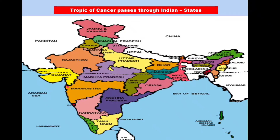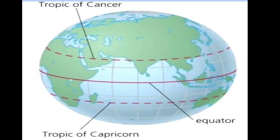Hello everyone. In this video we will quickly learn about the Tropic of Cancer. The Tropic of Cancer is an imaginary line at an angle of 23 and a half degrees latitude north from the equator, that passes through the middle of India.